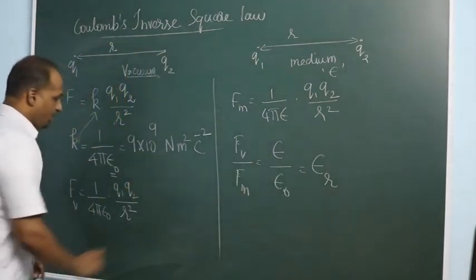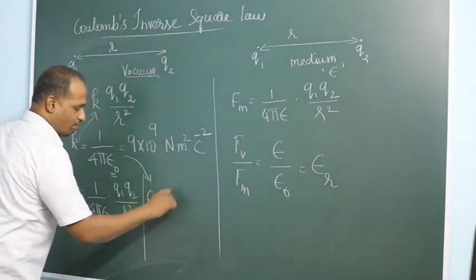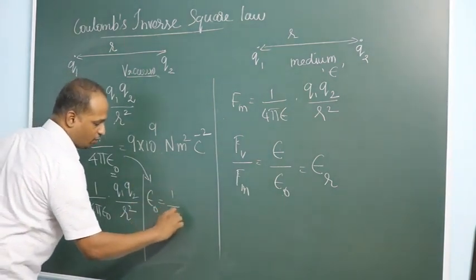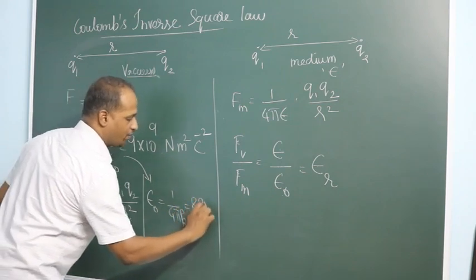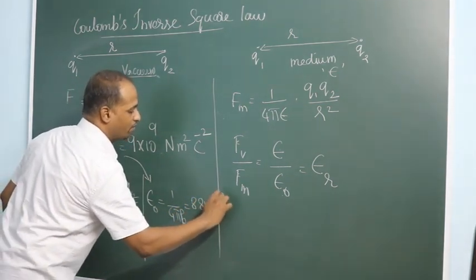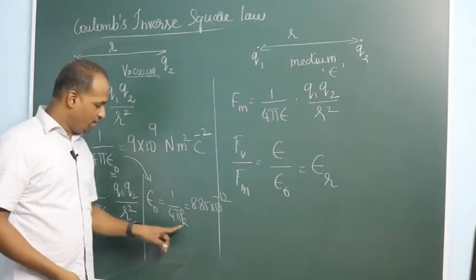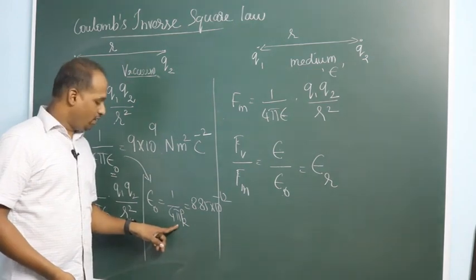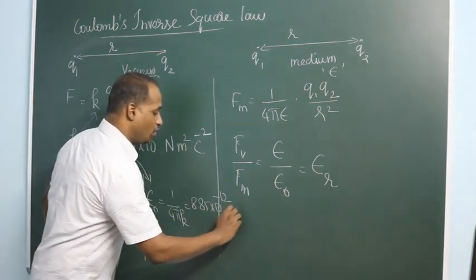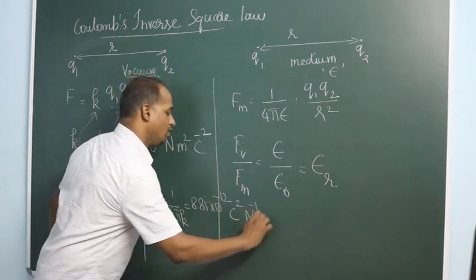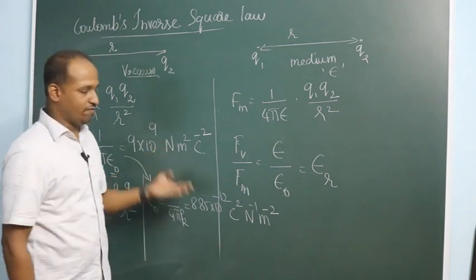So the permittivity here, if you write from this, you can write epsilon naught is 1 by 4 pi K. Its value is around 8.85 into 10 power minus 12. Since epsilon naught is the inverse of K, while 4 and pi do not have units, then its unit will be Coulomb square Newton inverse meter inverse square, which is essentially the reciprocal of this.